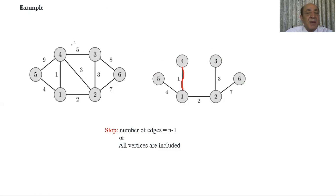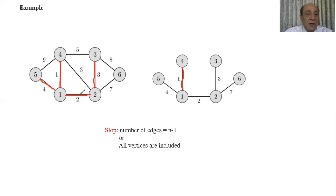Here is an example. We start with the minimal cost edge, weight 1. Then we have cost 2 — no cycles, so we include it. Then weight 3: we cannot pick one of the weight-3 edges because it creates a cycle, but we can pick the other one since it does not form any cycle. Then weight 4 — no cycles, so we include it. If we then choose weight 5, there will be a cycle, so we cannot pick the edge from vertex 3 to 4.